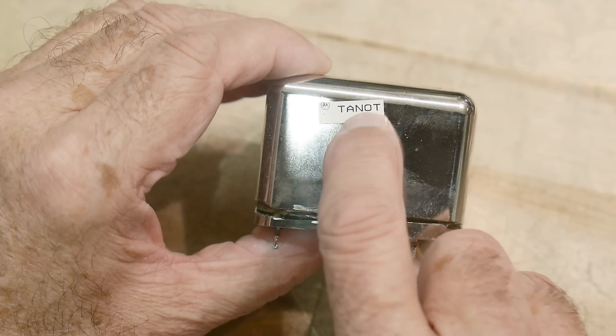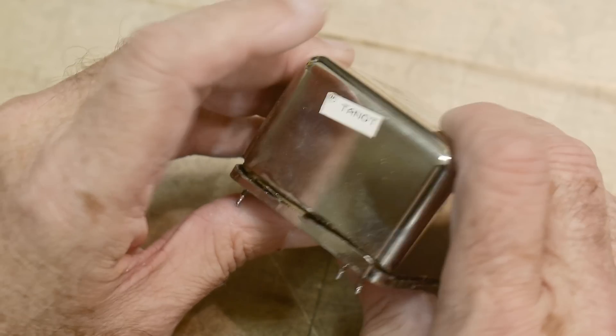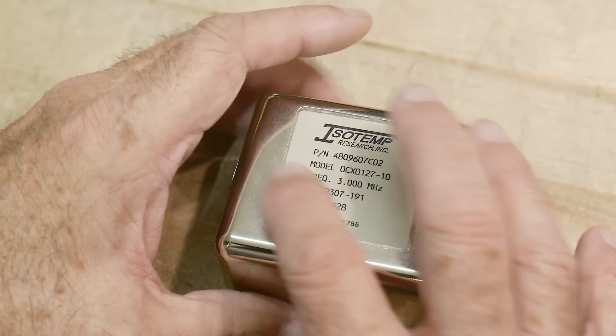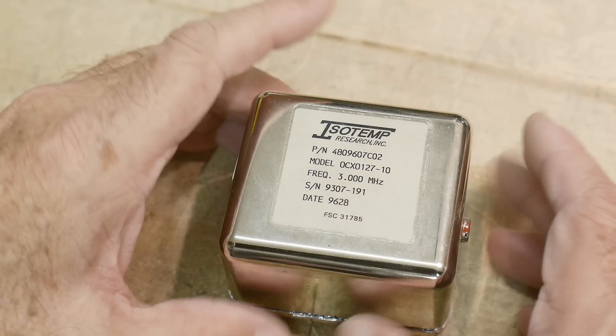I don't know what's this, Tannot, Motorola, what's this Motorola on it? It's interesting. Anyway, I don't know who uses a 3MHz primary clock.